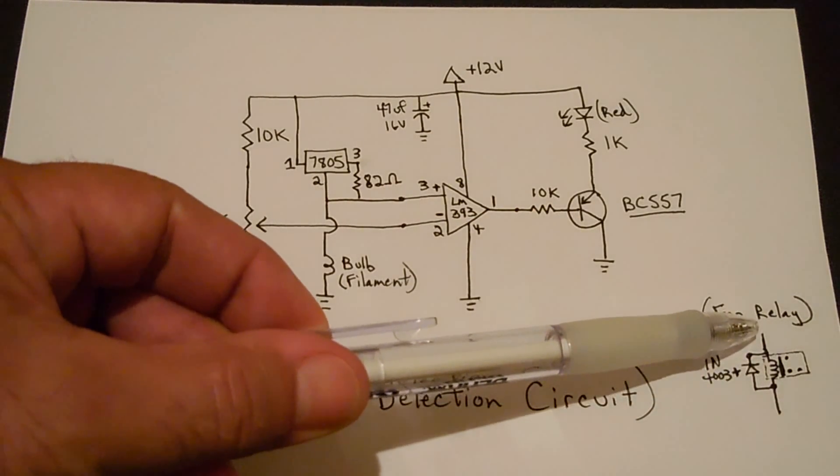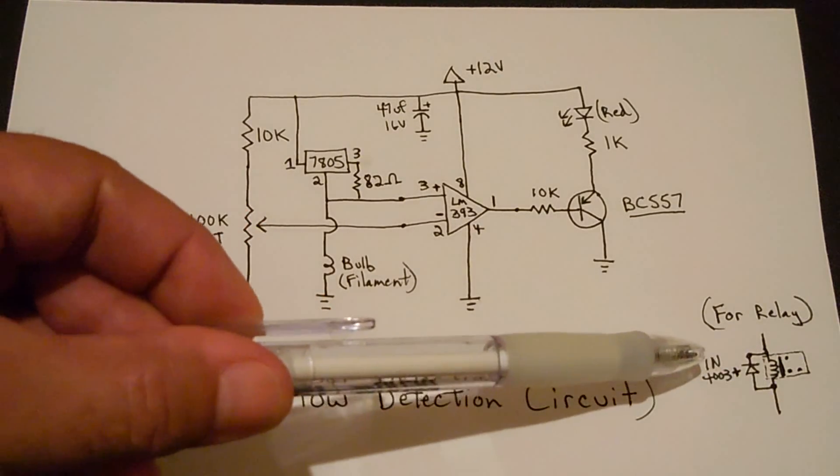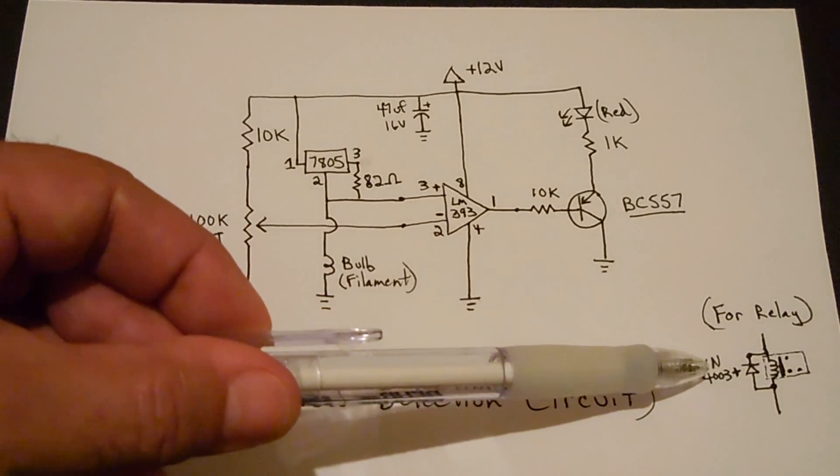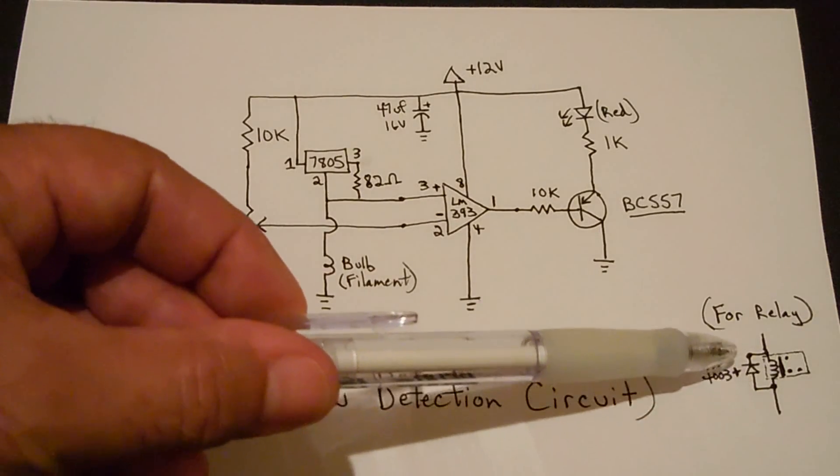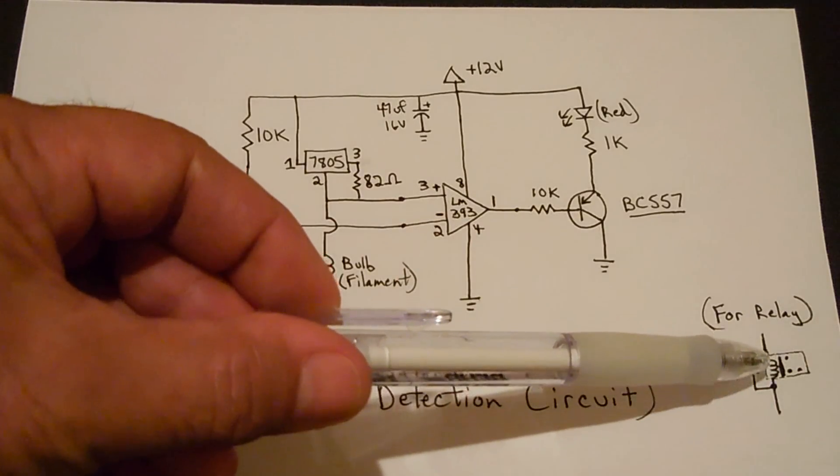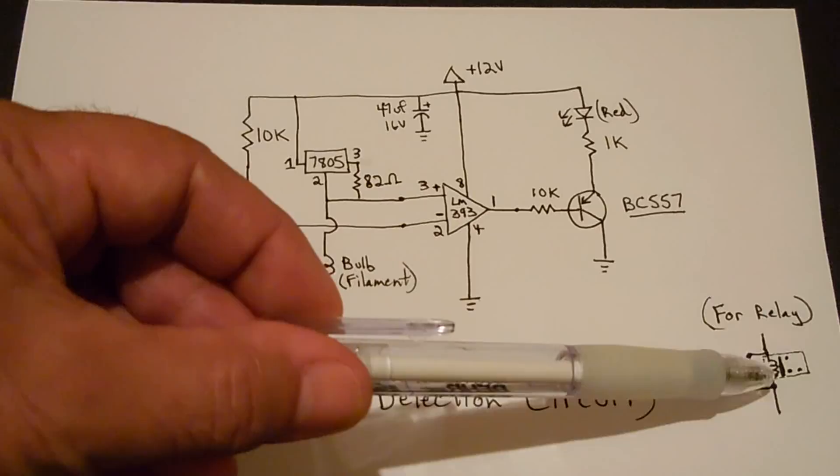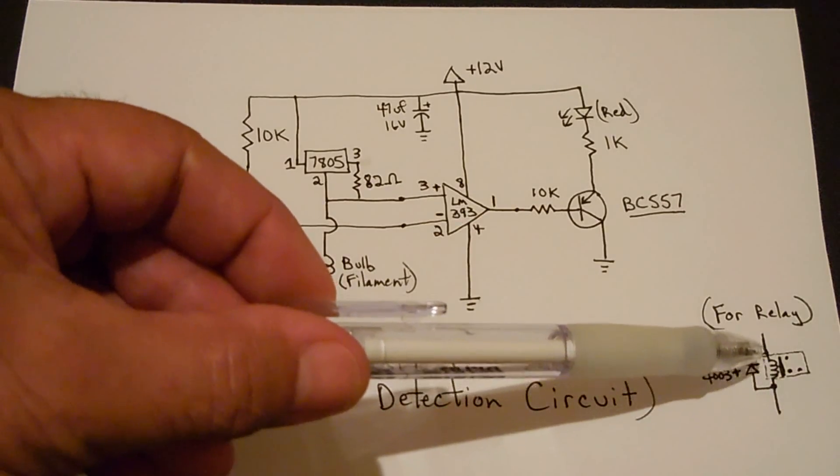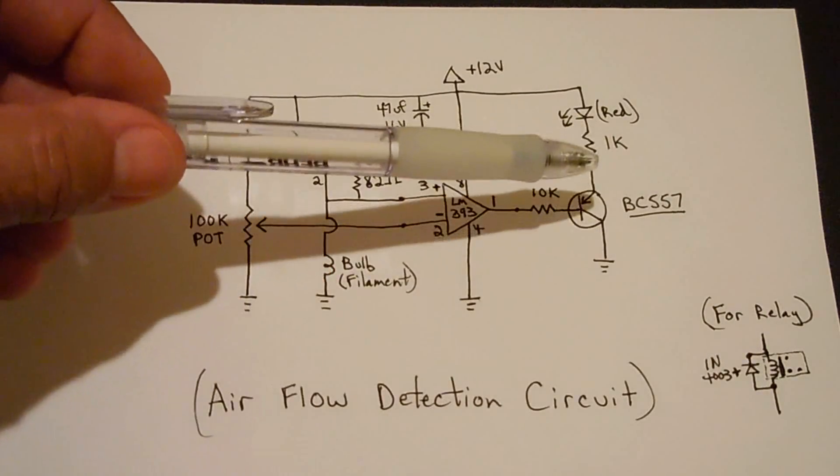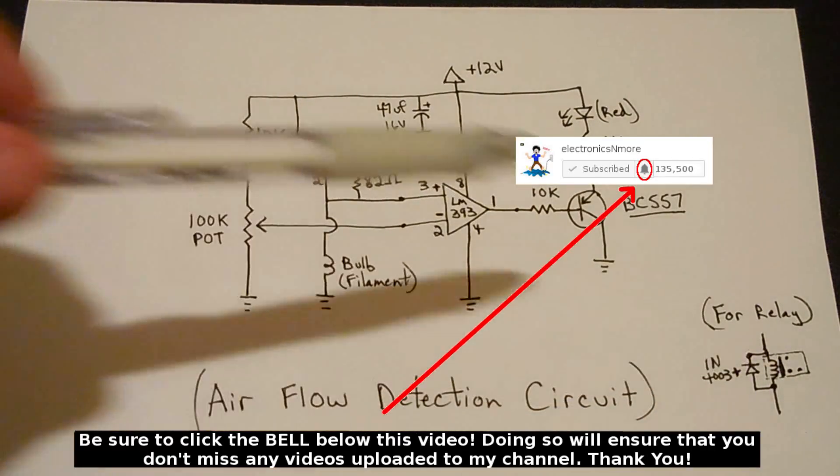And over here is where you would add the 12 volt relay – 12 volt relay coil, 1N4003 rectifier diode or higher connected in parallel. The purpose of that is when this relay coil no longer has voltage applied, the magnetic field is going to collapse and you're going to have a high voltage spike which can destroy this transistor, so that's why you want to use that rectifier diode.